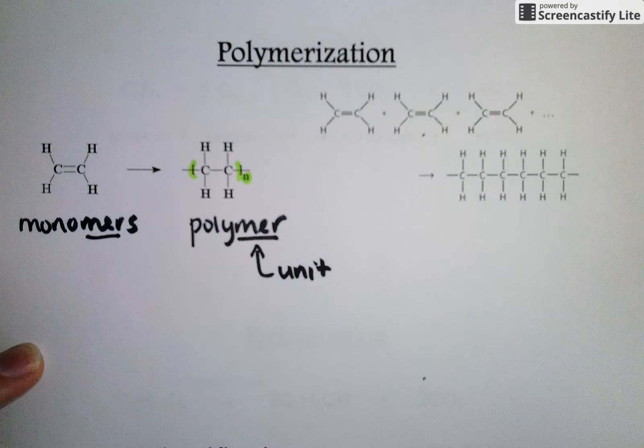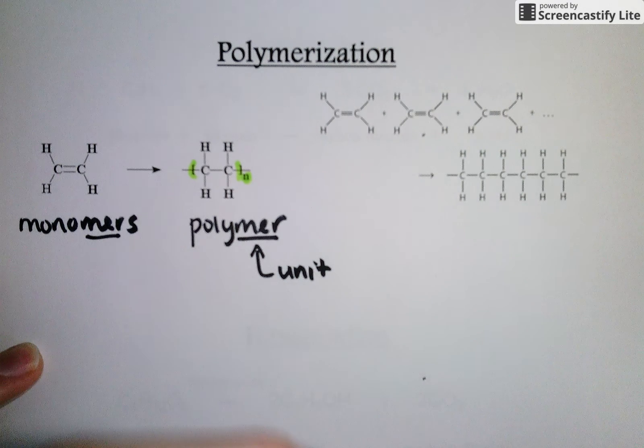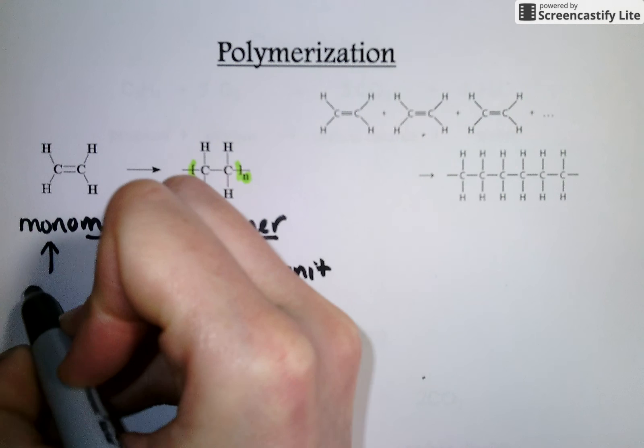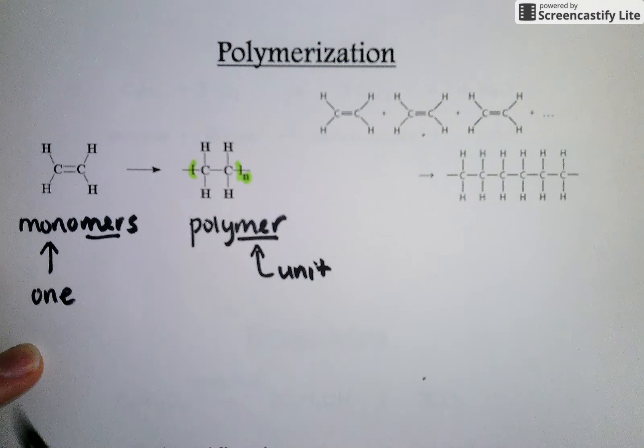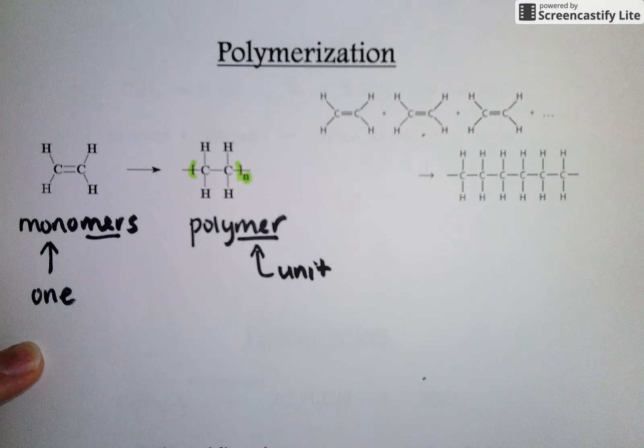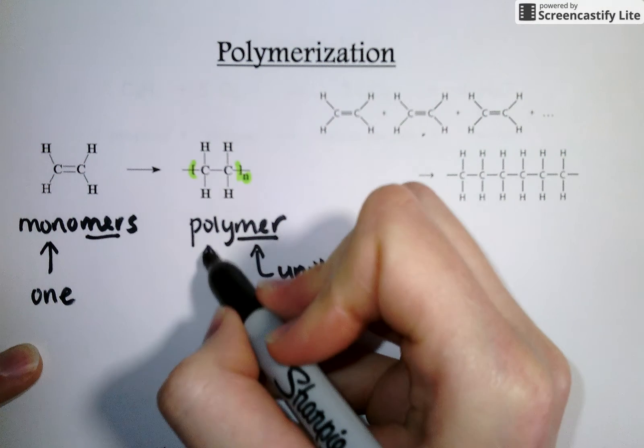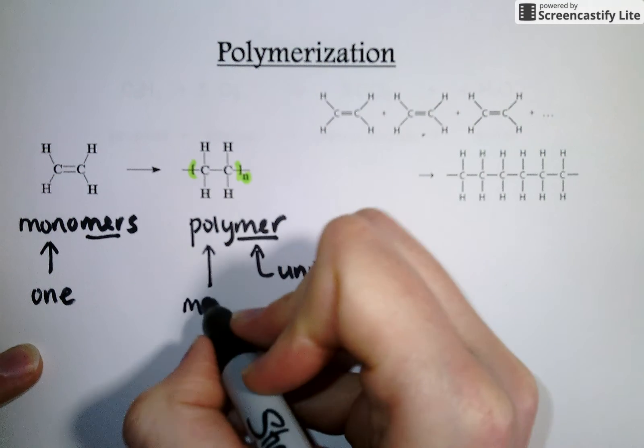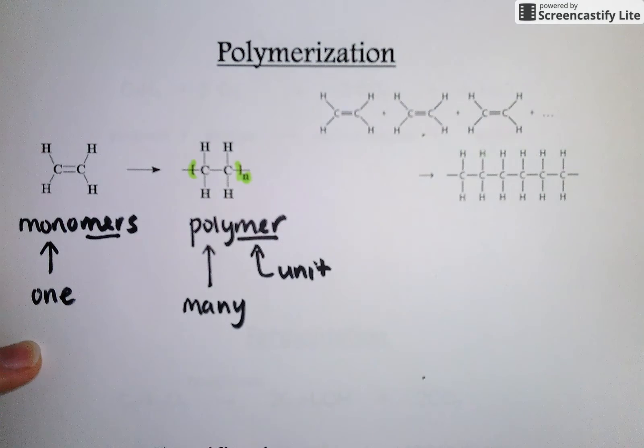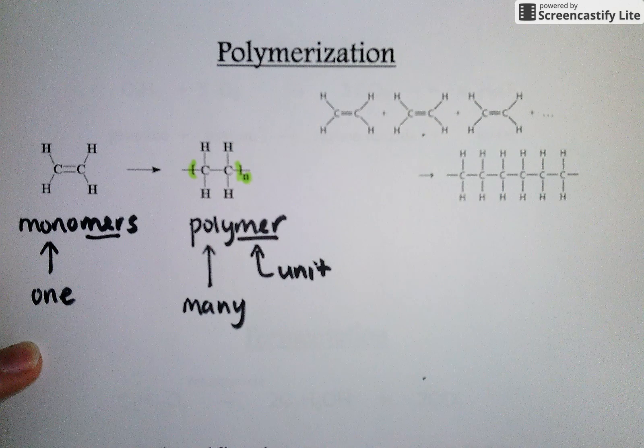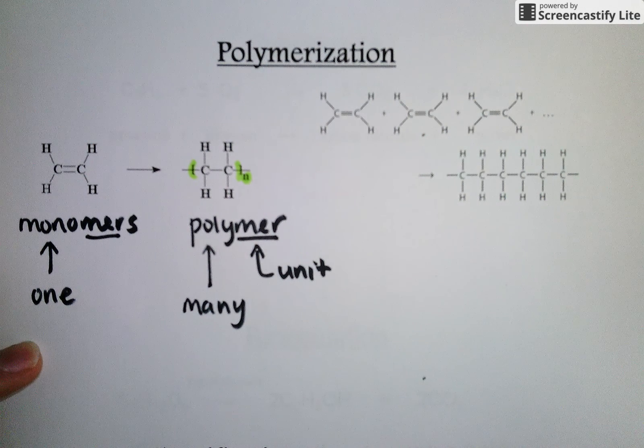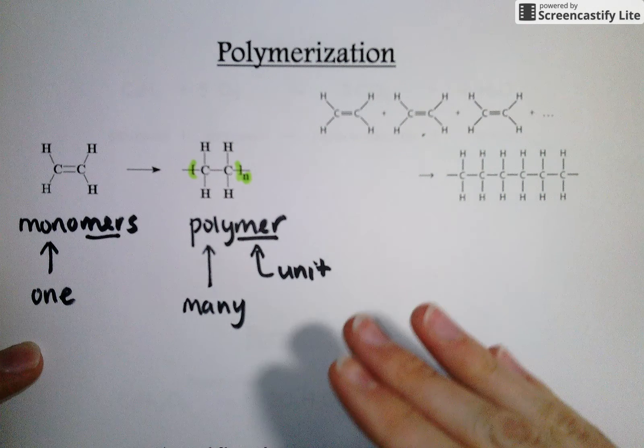And in that case, we're left with mono versus poly. Well, mono means one. So your monomer is your one unit. And when you link lots of monomers together, you get a polymer where poly means many.